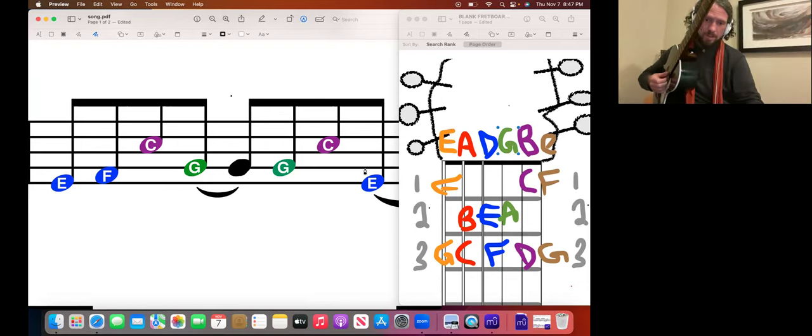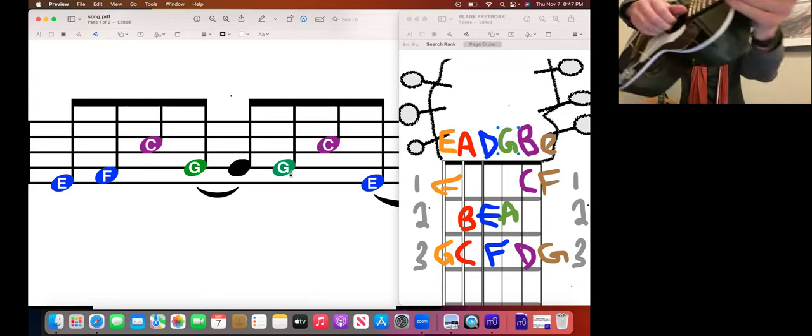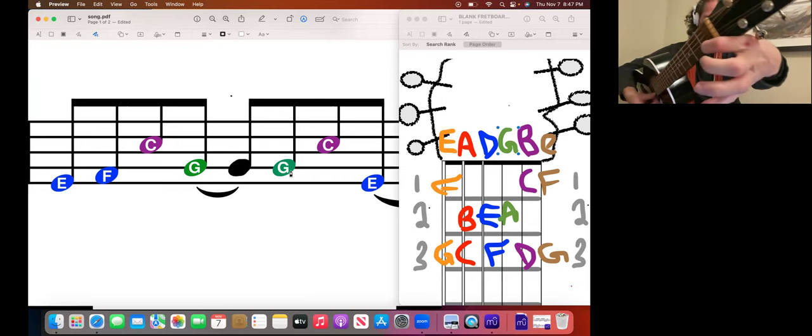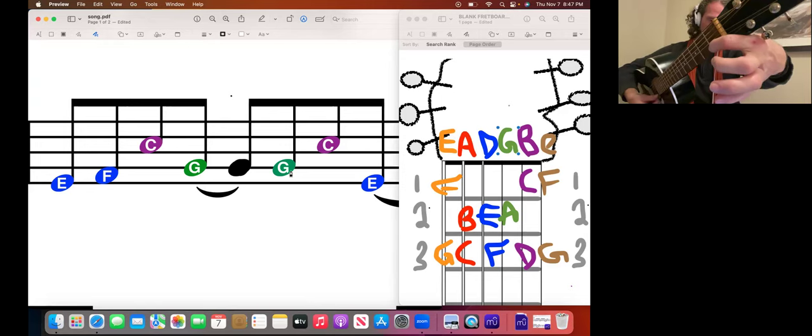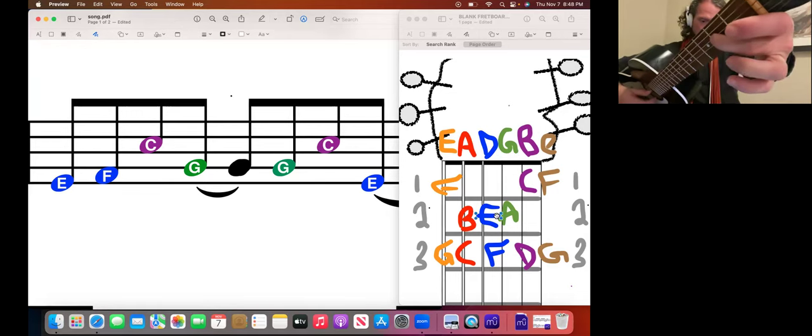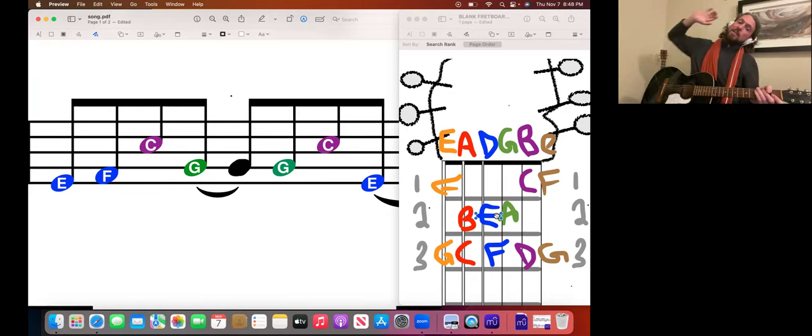Then again we find the green G, play and say green G. Then we find the purple C, purple C. It's a purple string on fret one and the blue E. So blue string, fret two, E. Makes reading guitar so much easier.